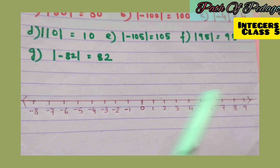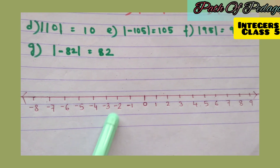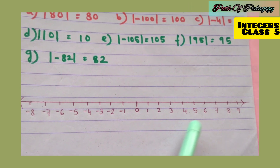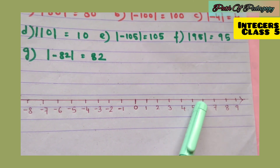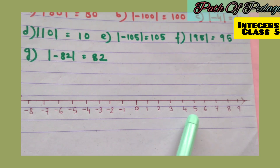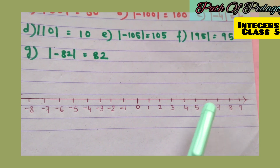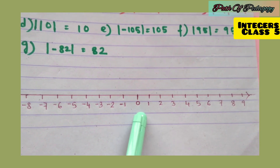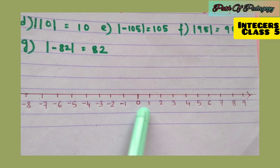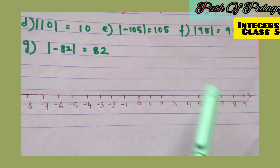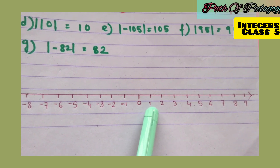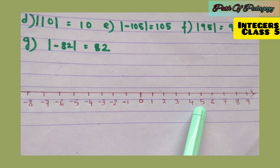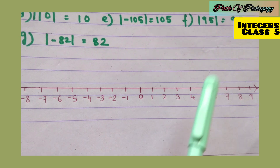Let's find the absolute value of integer 5. Since 5 is positive, it is on the right-hand side of 0. The distance from 0 to 5 is: 0 to 1 is 1 unit, 1 to 2 is 2 units, up to 4 to 5 — that is 5 units. So the absolute value of 5 is 5, which is positive.